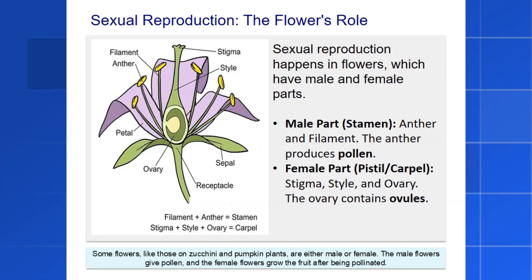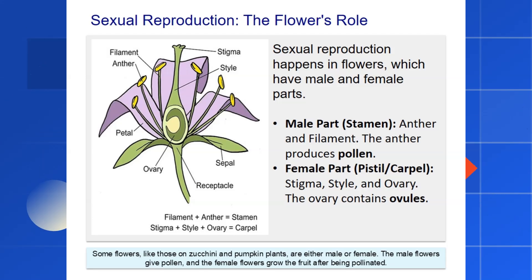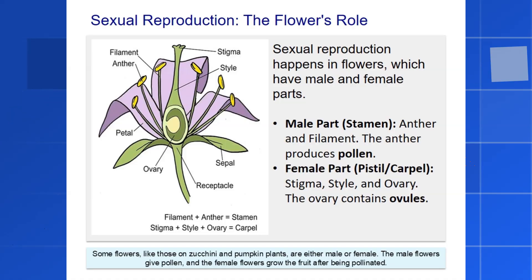For reproduction to happen, pollen from the anther must get to the stigma. Did you know that not all flowers have both male and female parts? Plants like pumpkins and zucchinis produce separate male and female flowers. The male flowers provide the pollen, but only the pollinated female flowers will actually grow into the vegetable we eat.